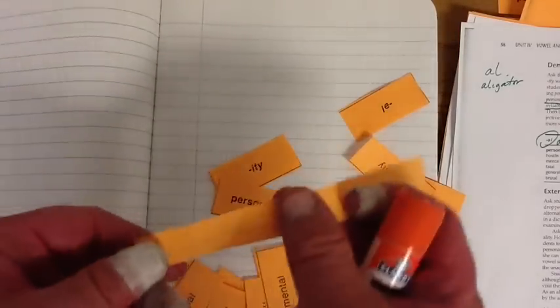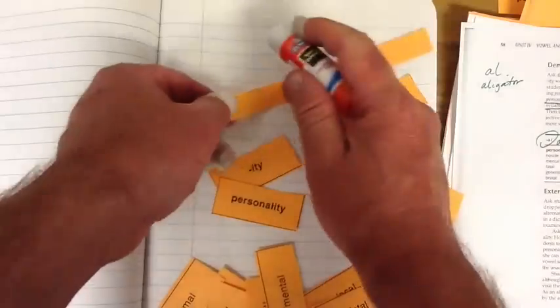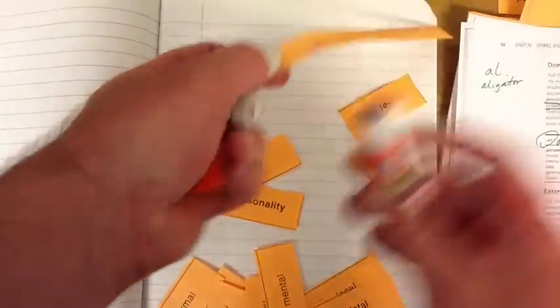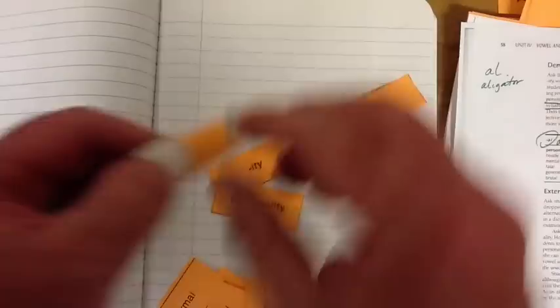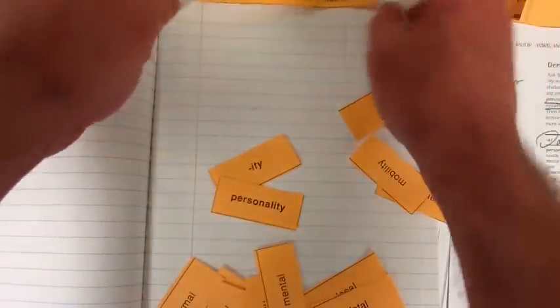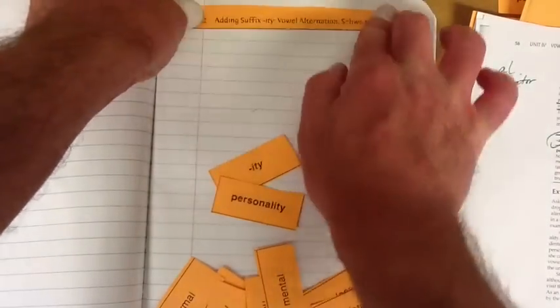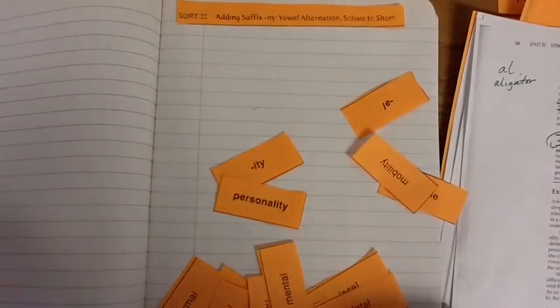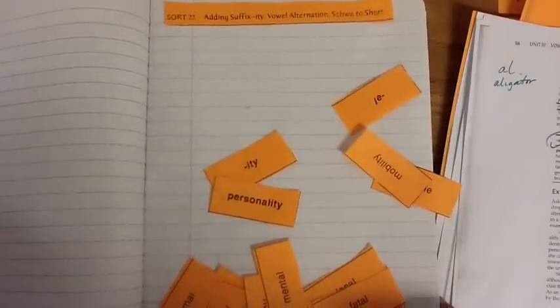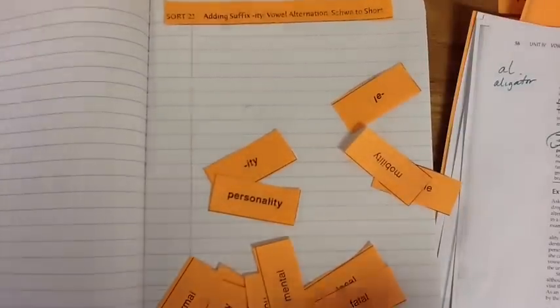Let's find out what this is all about. Let's go ahead and start by taking your heading, running a bead of glue across it. Let's place it at the top so we know what we're doing, what our focus is with this lesson. Looks like we're dealing with suffix I-T-Y and we're dealing with a schwa today.